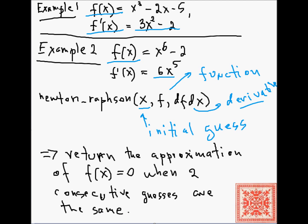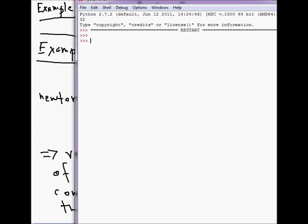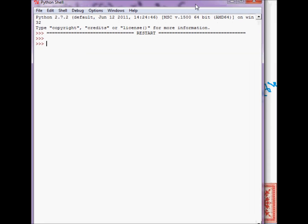So let's go and fire up our interpreter. So when you have implemented your Newton-Raphson method, here is a sample behavior. So that's a function.